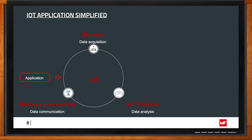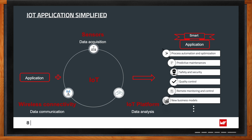Moving on — whenever we enable an application with IoT, it means sensors that acquire data from the physical environment, transmitting this data over a wireless connectivity link onto a data platform, which we call the IoT platform. Here the data can be used for analysis that results in value additions: process automation and optimization, safety and security, predictive maintenance, quality control, remote monitoring and control — and overall betterment of the application.